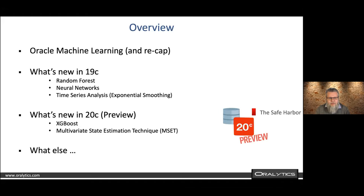I'm going to look at three main new algorithms within the 19C, 18C, and 12C versions of the database. You can get those on the Autonomous database, and as mentioned a few minutes ago, since December all of this is free — you no longer have to pay for it, which is a really important change with using machine learning features in the database.